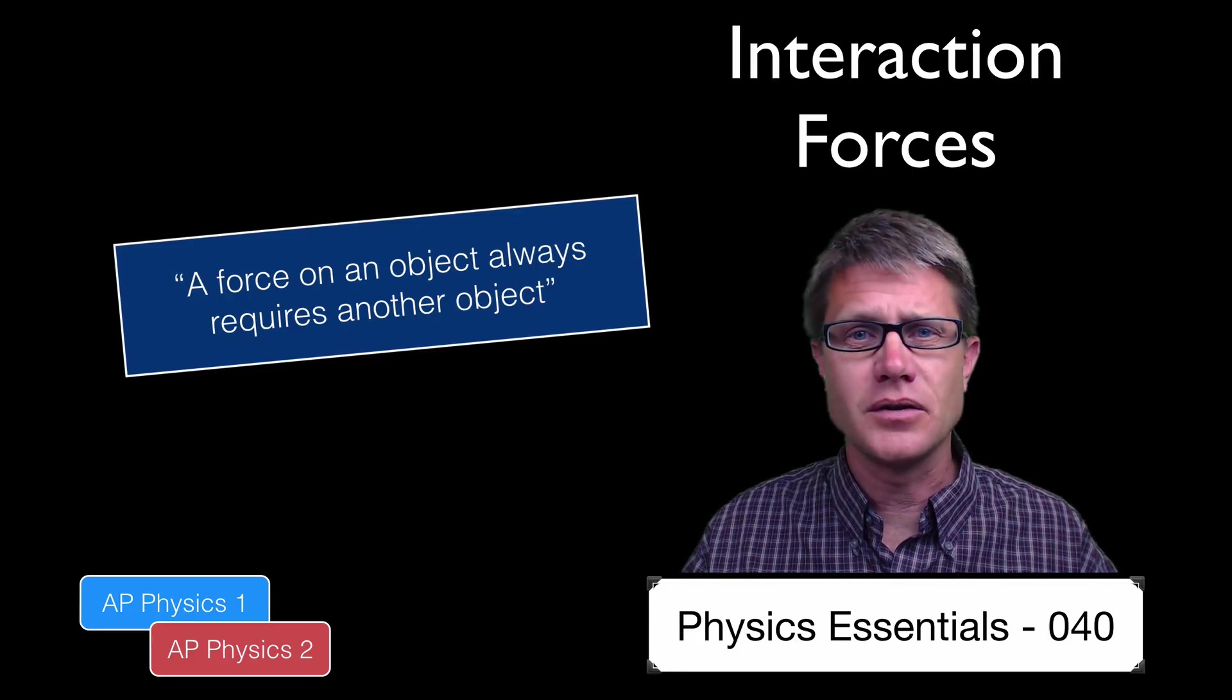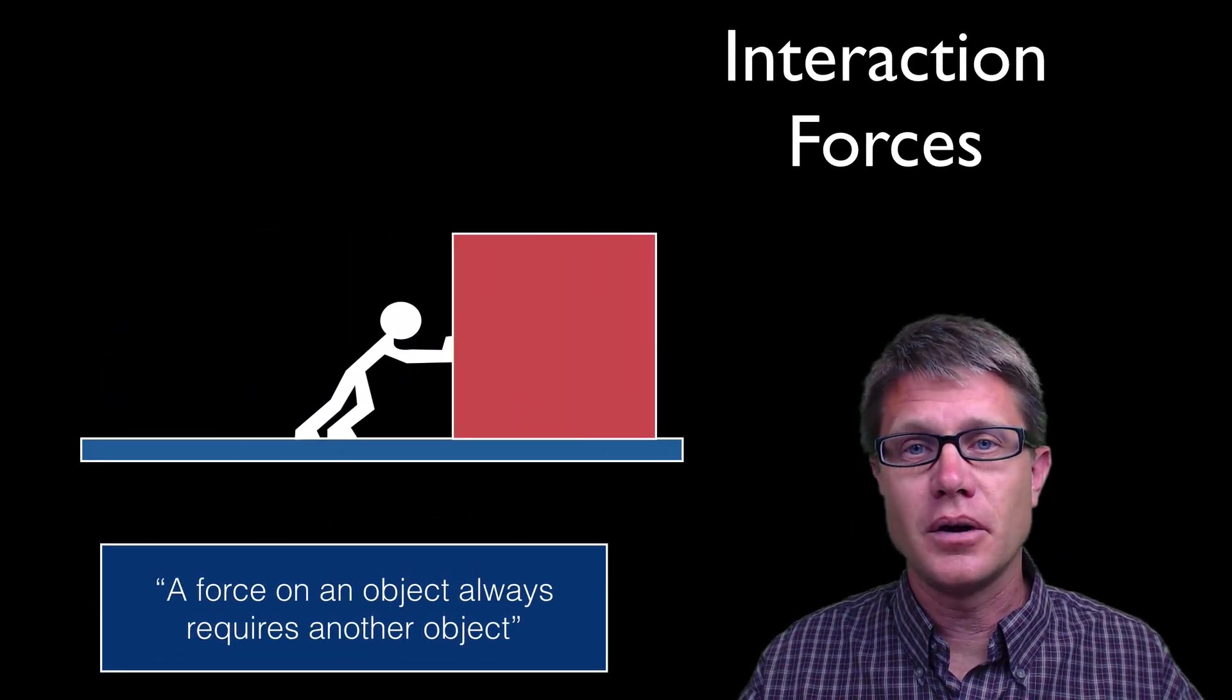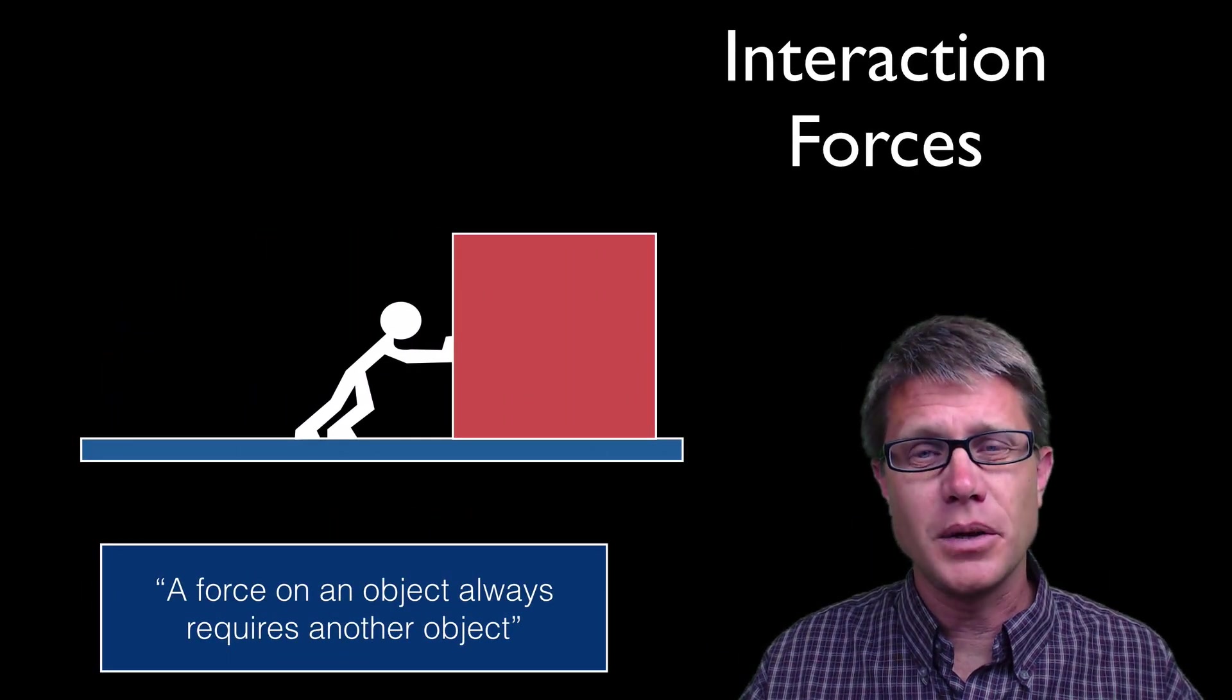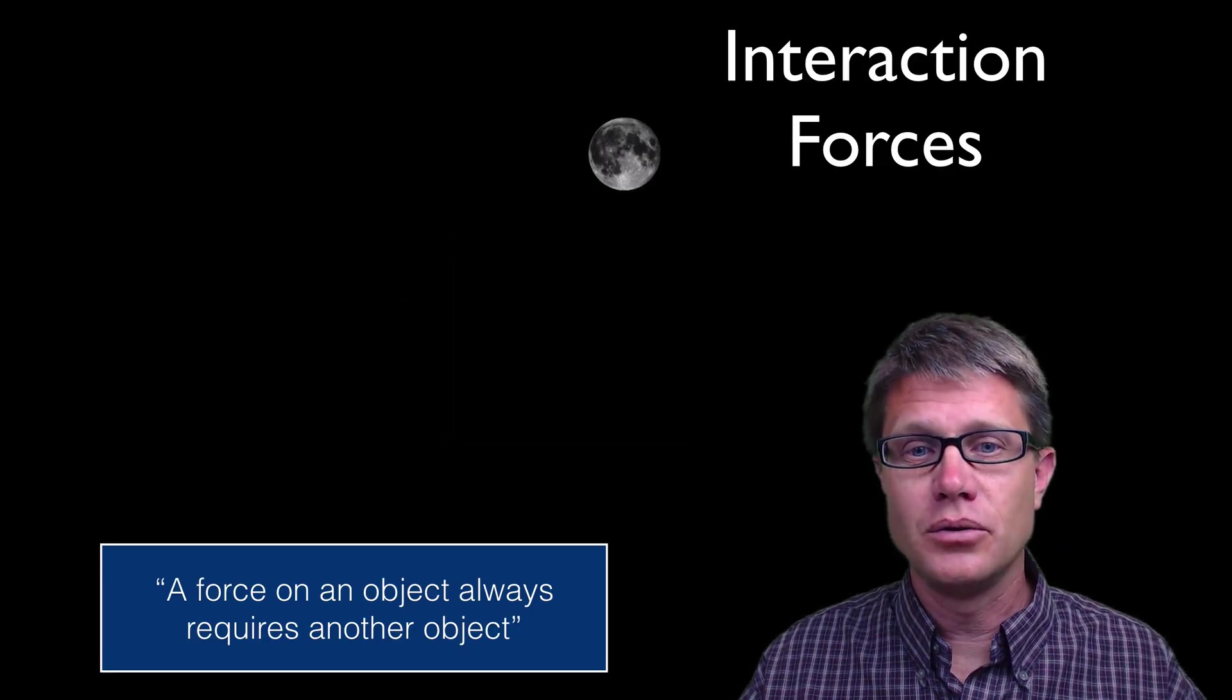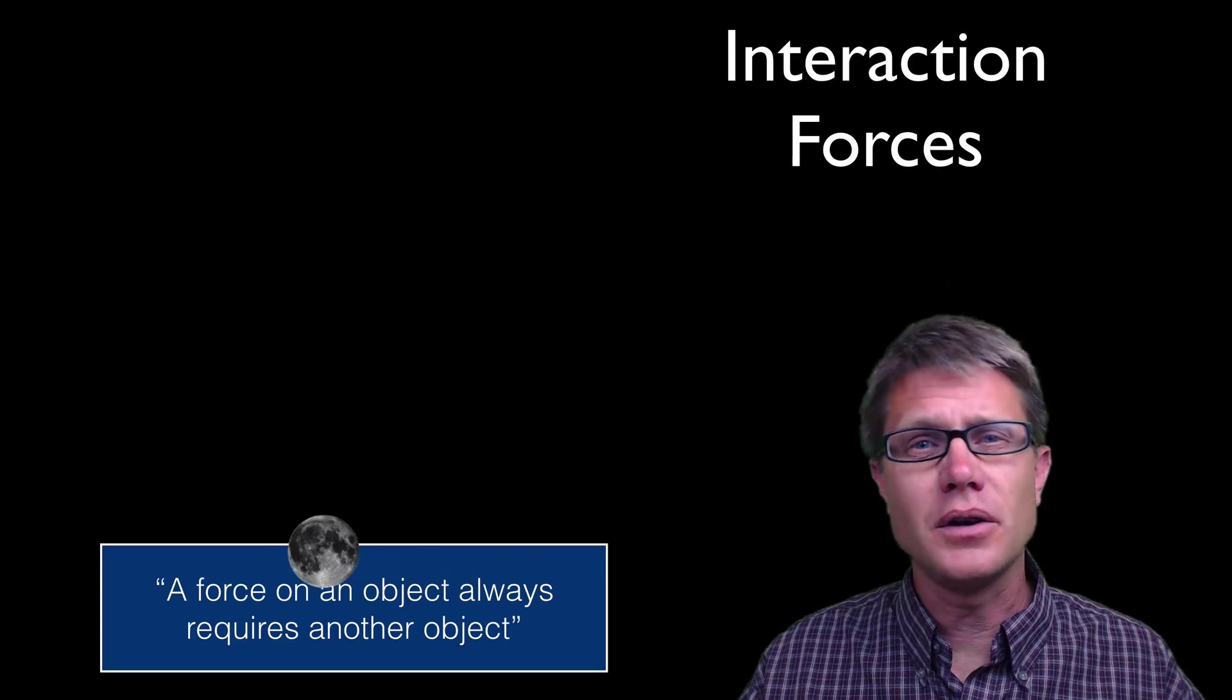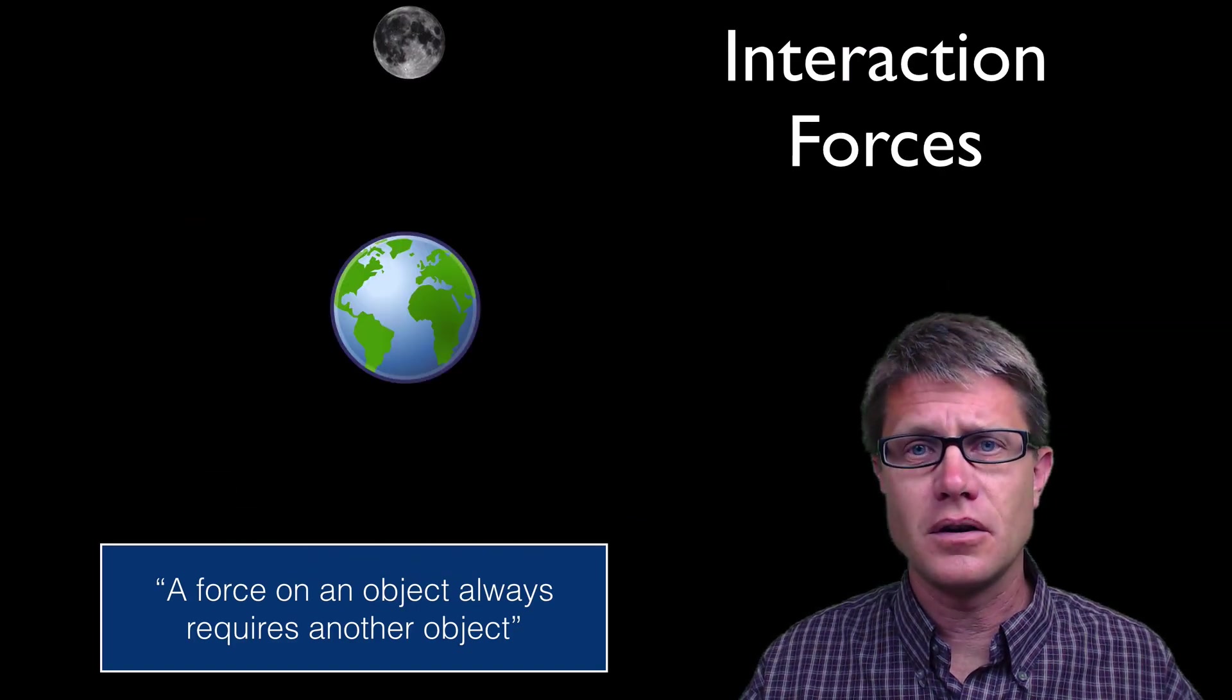So let's look at some scenarios and make sure this holds true. Let's say a box is being pushed across the floor. There is clearly a force being applied to the box. What is the other object? It is the person pushing the box. Or if we look at the moon as it orbits, clearly a force is being applied to the moon. What is the other object? Well that is just the earth.